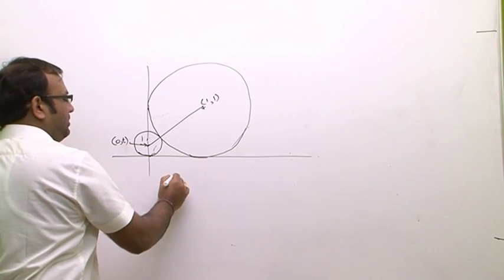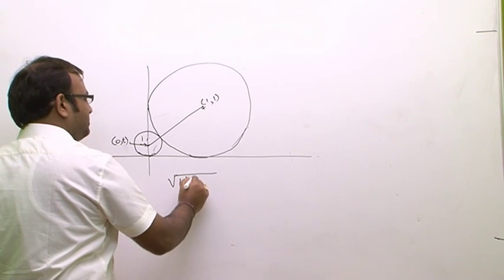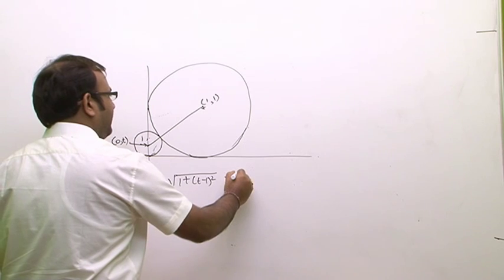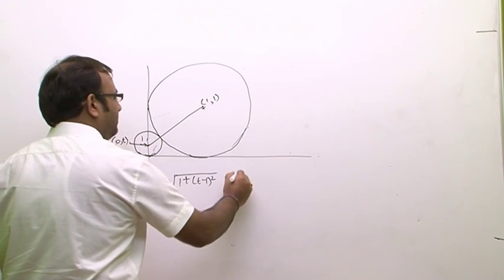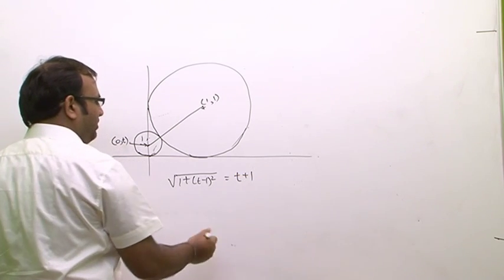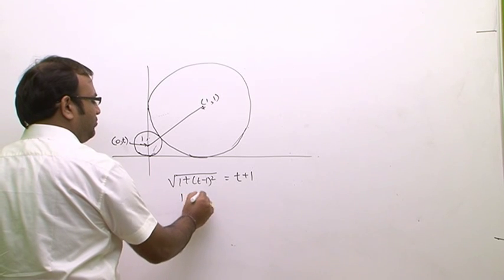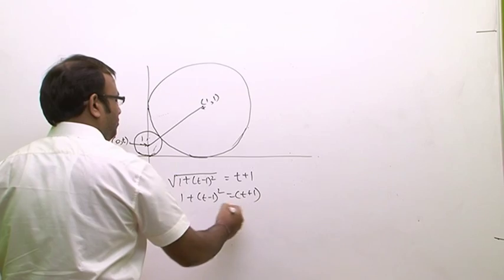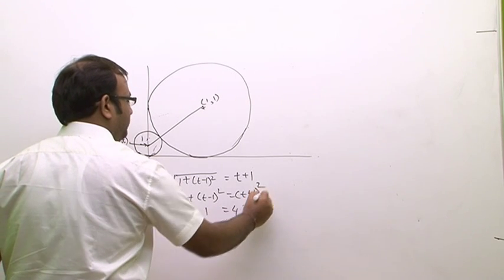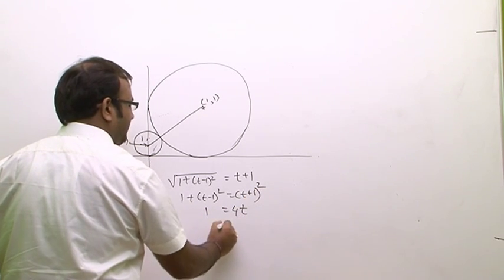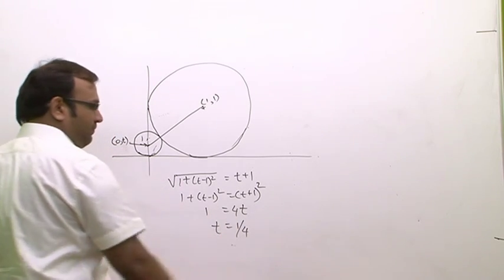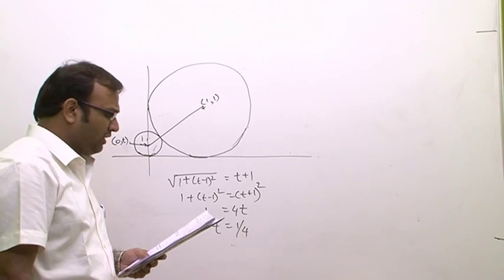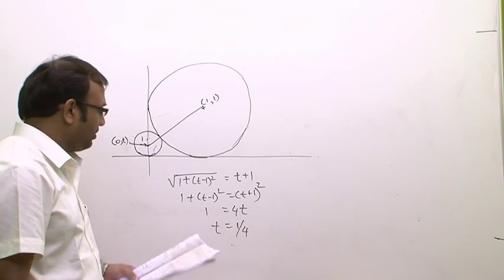The distance between centers equals the sum of radii: √(1 + (t-1)²) = t + 1. Squaring and simplifying: 1 + (t-1)² = (t+1)², which gives 1 = 4t, so t = 1/4. The radius of the second circle is 1/4, making option 4 correct.